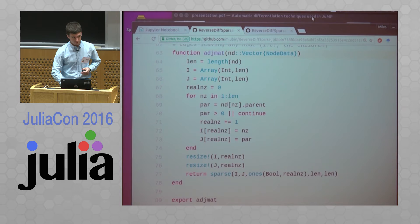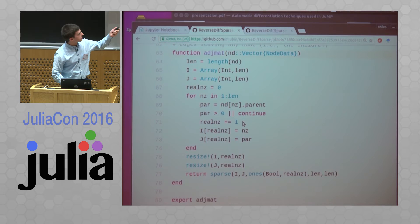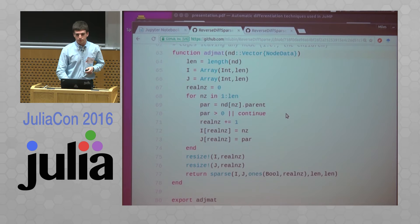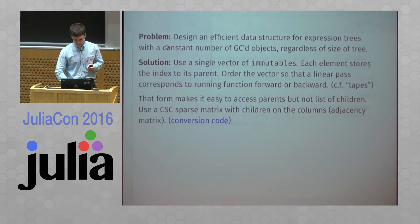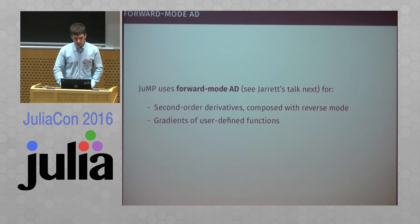So our data structure is: a vector of immutable objects — each containing a bit of information about the node and the index of its parent — plus a single sparse matrix (the adjacency matrix). Now we have all the information needed to work with this expression graph. We can look up the list of children very efficiently. The whole thing is stored in essentially four Julia objects per expression graph, which is a pretty good representation.